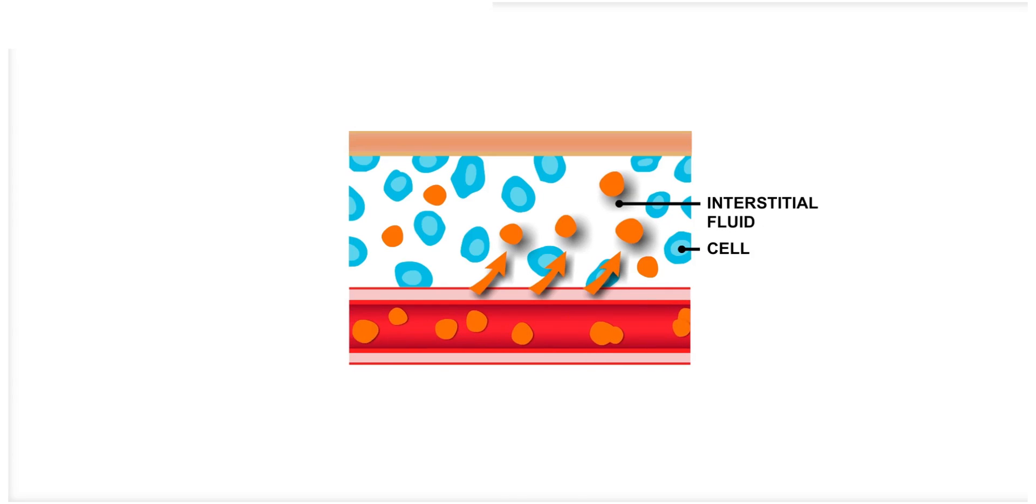Once in the interstitial fluid, glucose then moves into the cells where it can be used for energy.